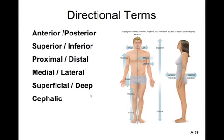Now let's take a look at some directional terms. Directional terms are very useful because we use them to describe the position of one structure relative to another. First, let's look at anterior versus posterior. Anterior generally means to the front and posterior generally means to the rear. Anterior is the portion that, during locomotion, would pass a point first, and the posterior side is the part that would pass second. We might say that the sternum, which is the bone in the chest, is anterior to the heart because it's in front of the heart.